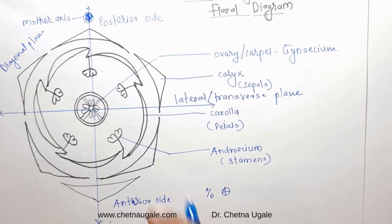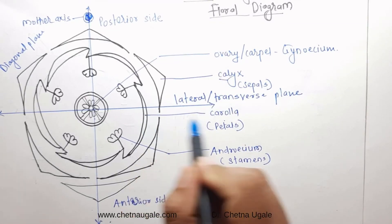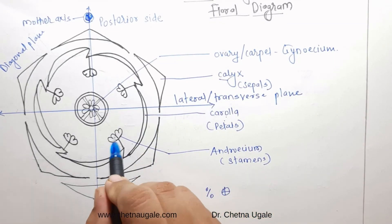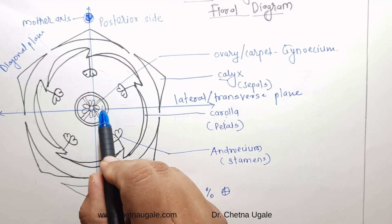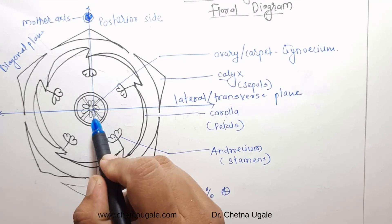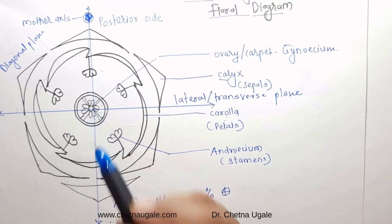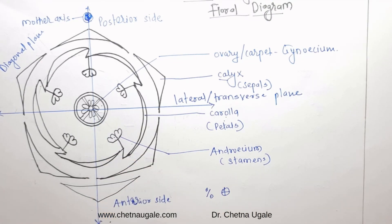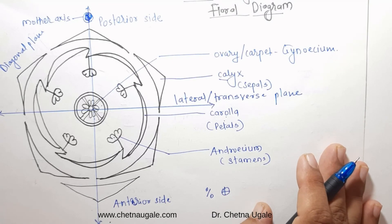The gynoecium is represented by the transverse section of the ovary showing the placentation, that is, the arrangement of ovules within the ovary. This is the basic part of the floral diagram of the flowering plant.